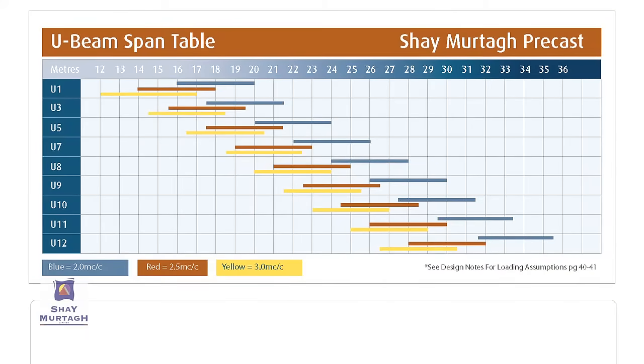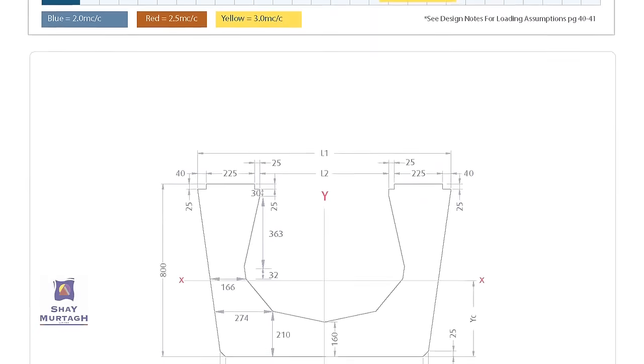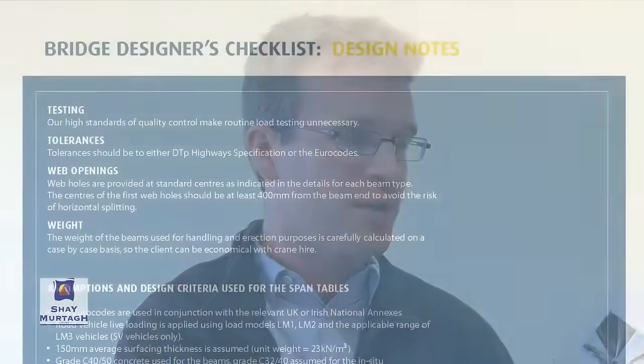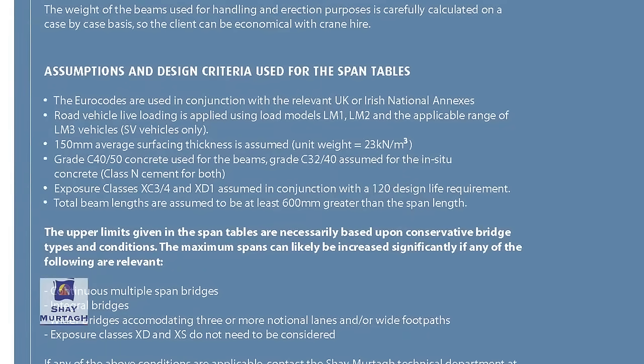With regard to preliminary design, we've produced Eurocode-compatible span tables for each of our bridge beam types, typically given for a variety of beam centres. The span tables show the maximum achievable span for a specific size of a certain beam at a specific beam centre. These span tables are necessarily conservative, based on conservative assumptions used in the preliminary design estimate of what spans these beams can achieve. Those design assumptions are also contained in the back of the manual.